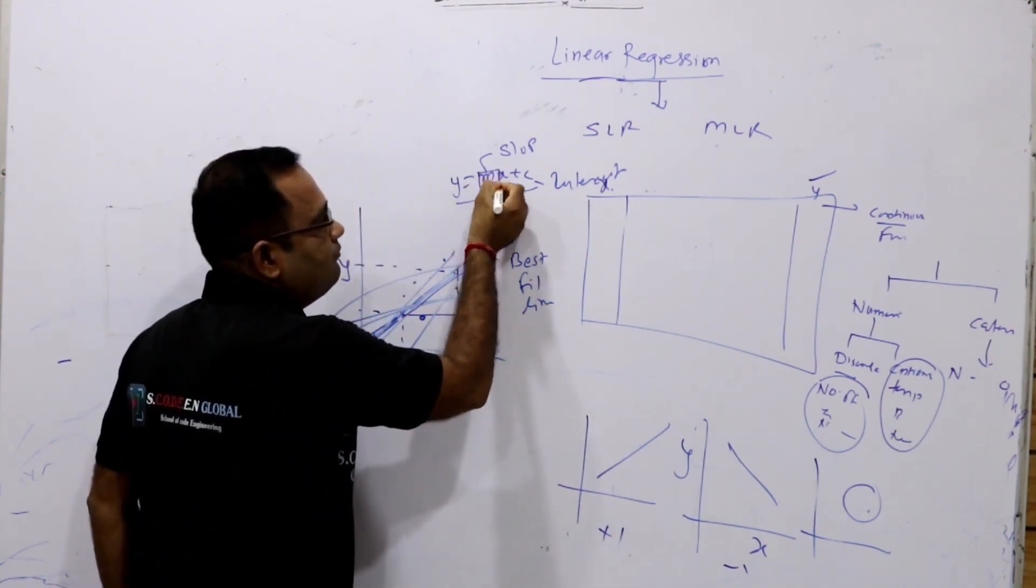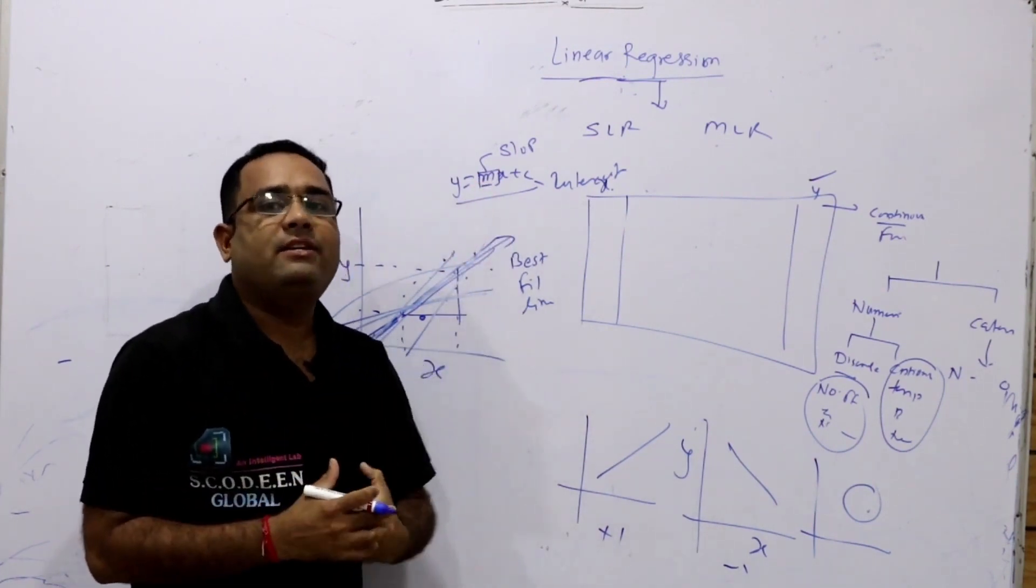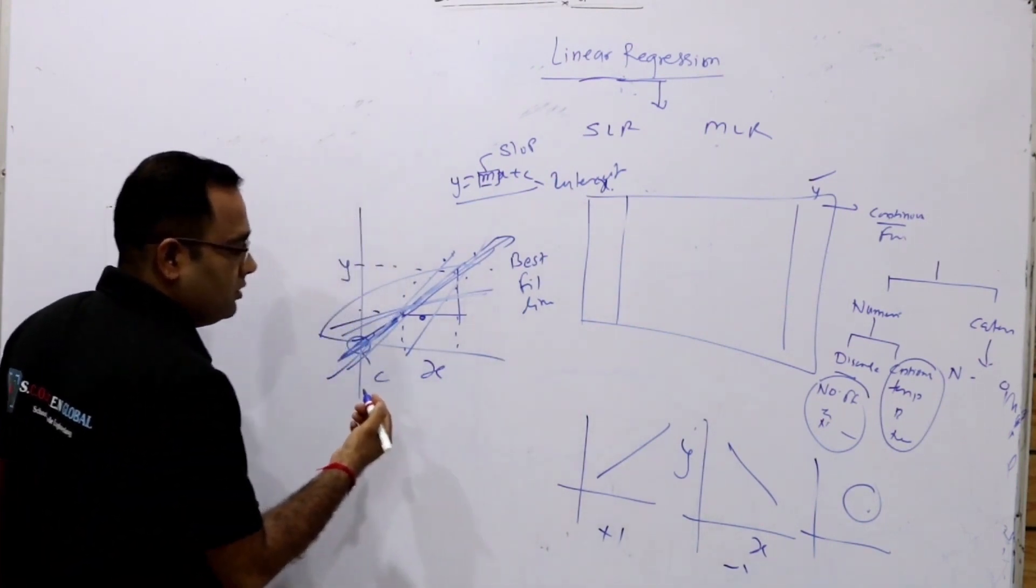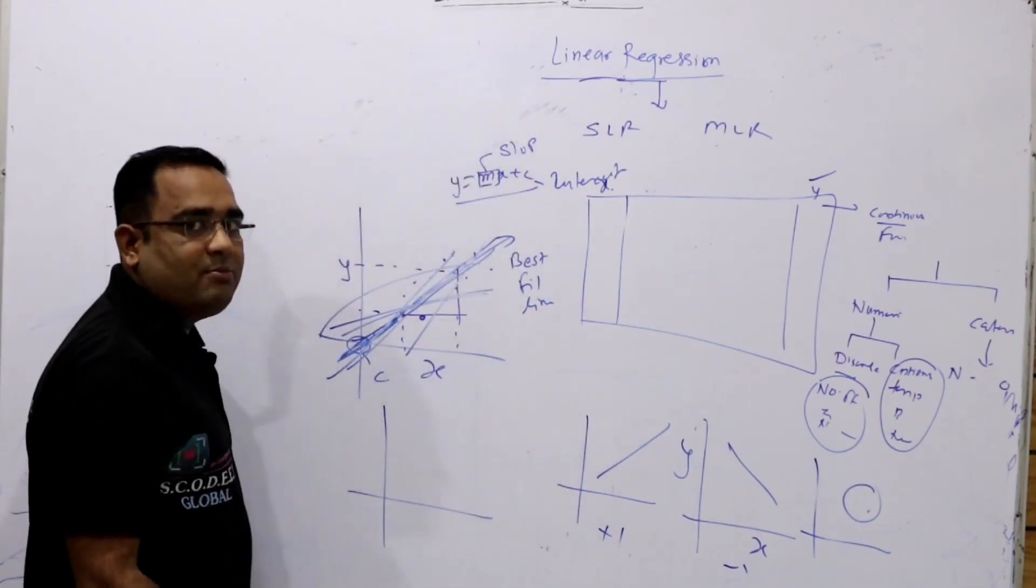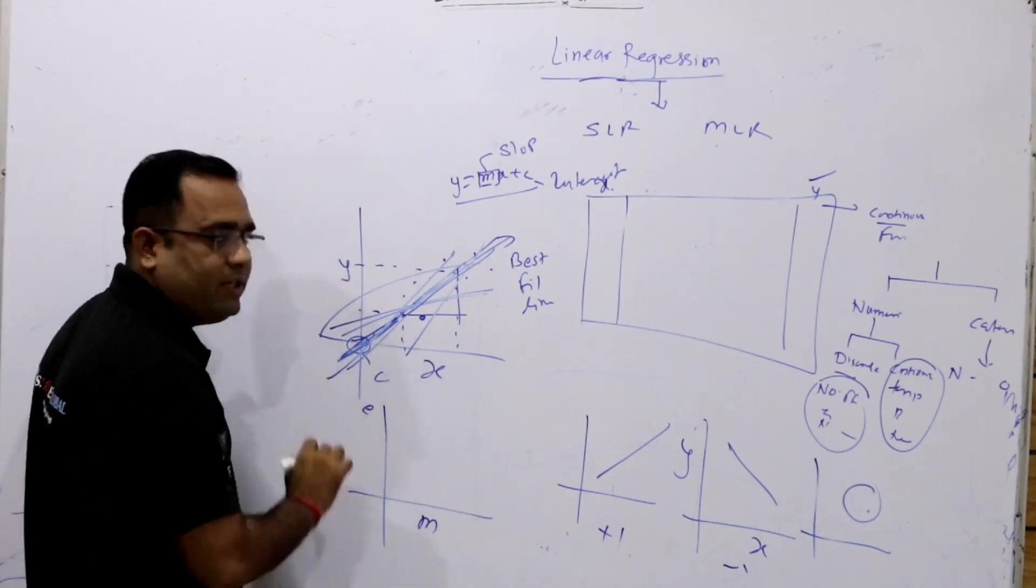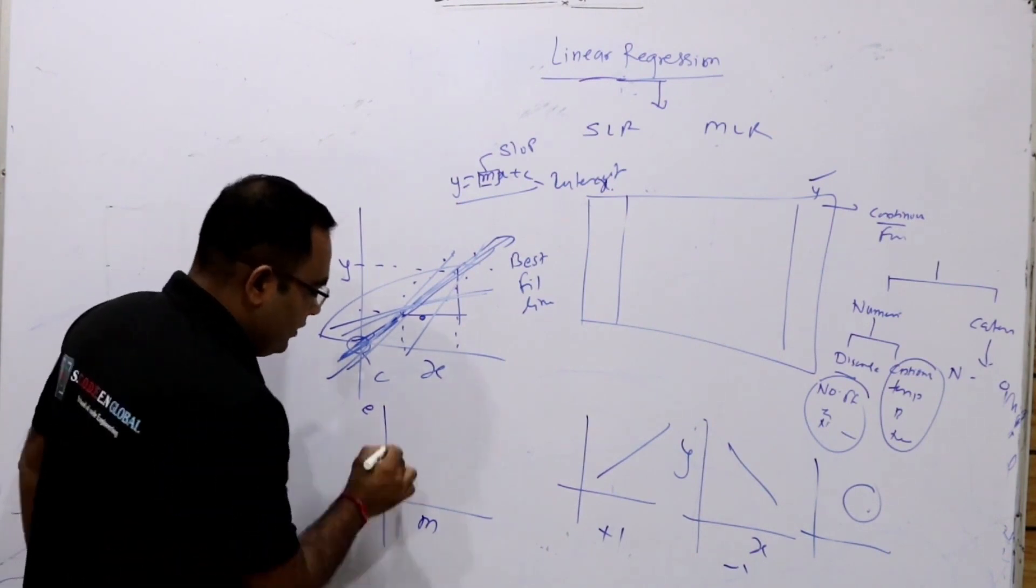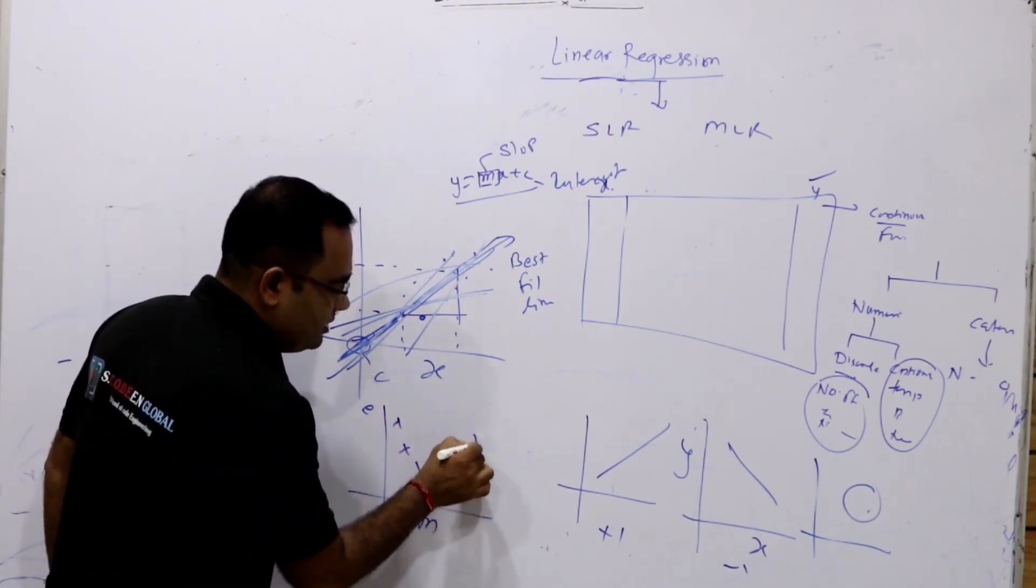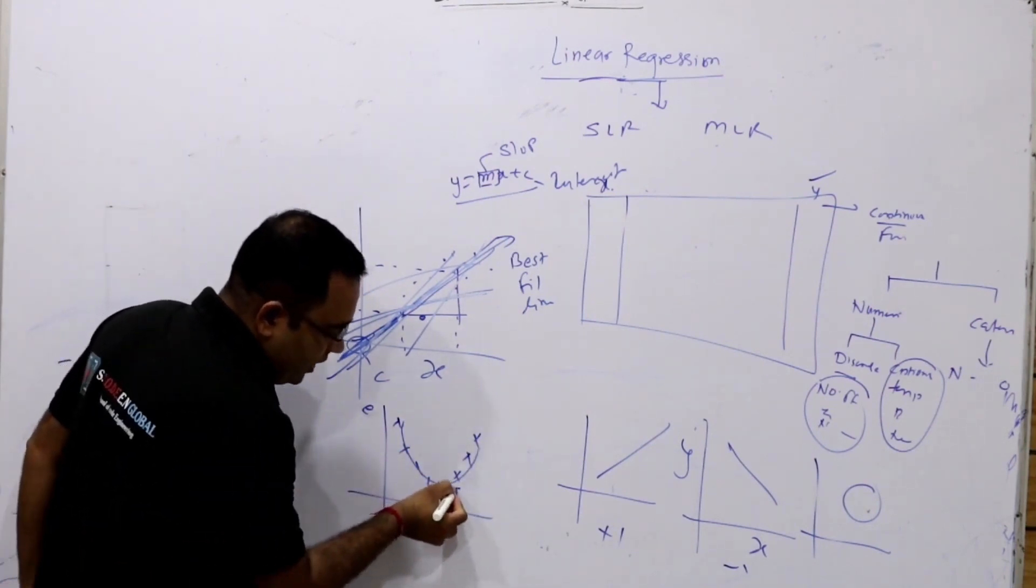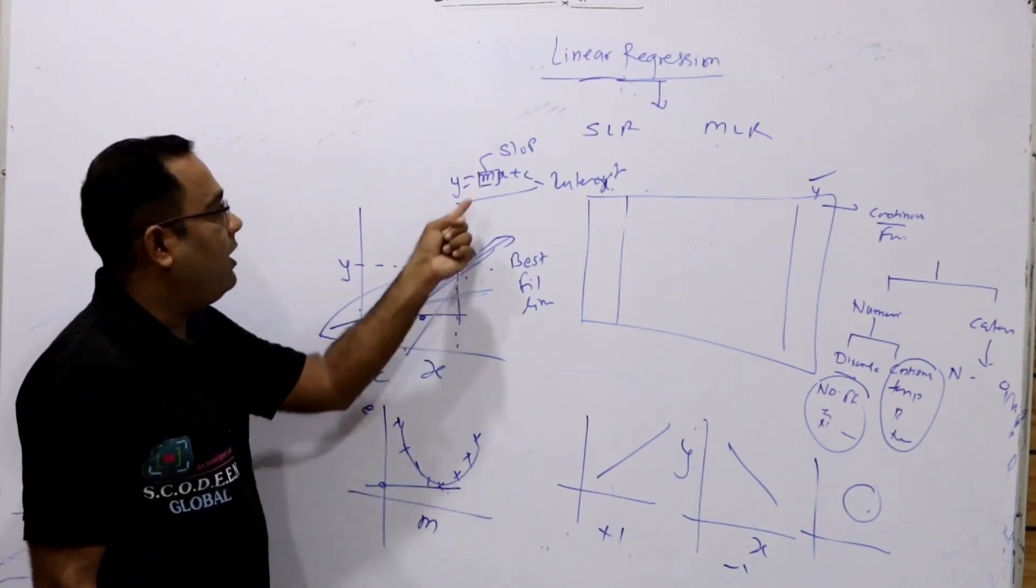To find this m, we can use gradient descent. That means, a convergence theorem, we can say. So, this convergence theorem means to find the global minimum. So, here, suppose we have m, and we are plotting the graph against error. And we change the m, so we will get this parabolic shape. So, this point, where this error is minimum, we can select m value for a line relation.